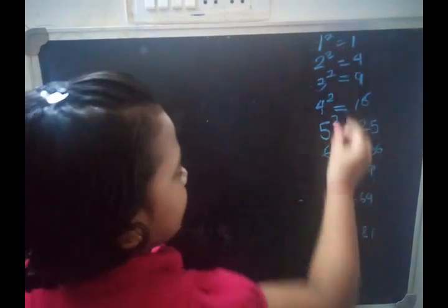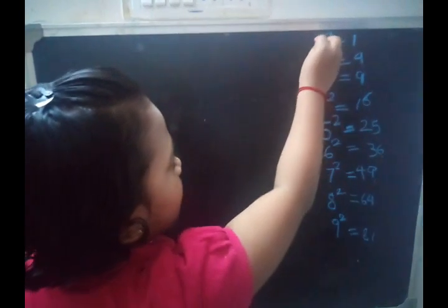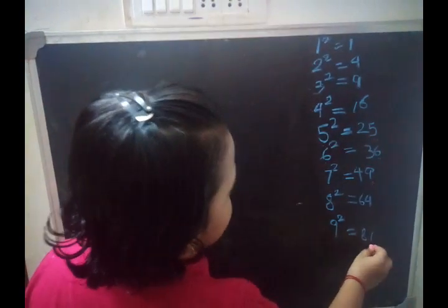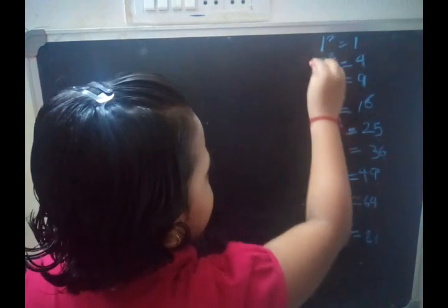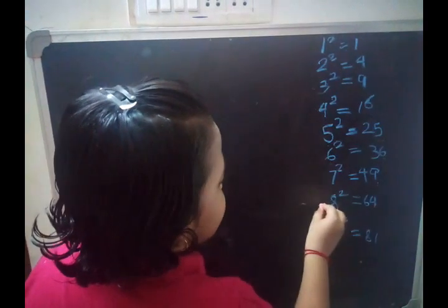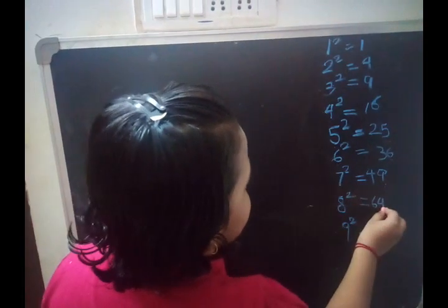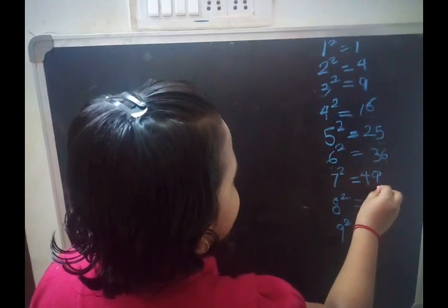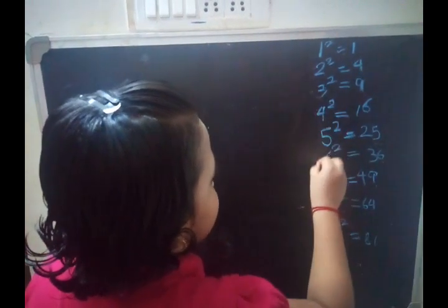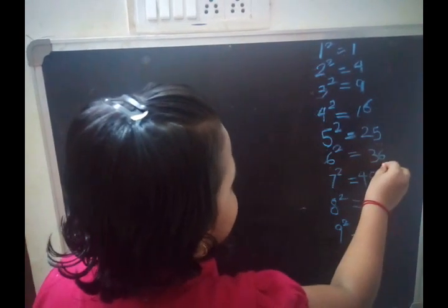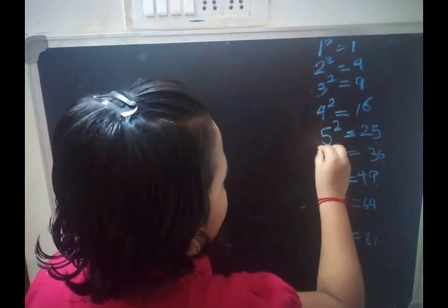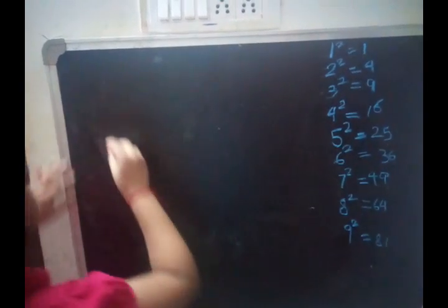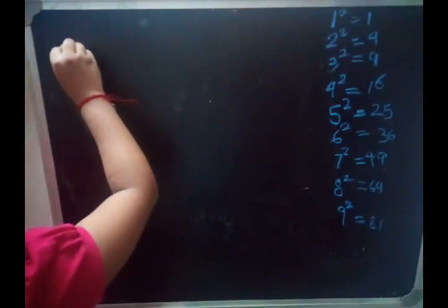If you see it carefully, 1 squared and 9 squared have ending digit 1. Similarly, for 2 and 8 squared the ending digit is 4; 3 and 7 squared ending digit is 9; 4 and 6 squared ending digit is 6; 5 squared ending digit is 5. Now we will go to the method.